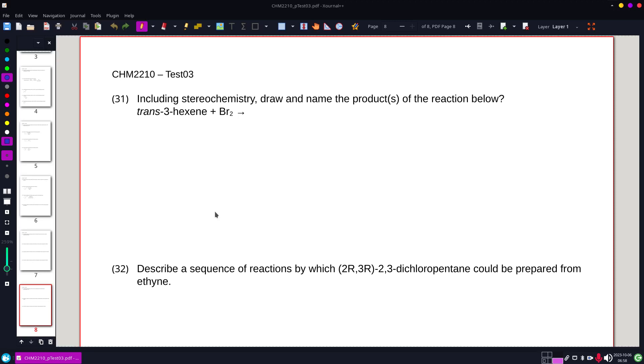Including stereochemistry, draw and name the product of the reaction below which starts with trans-3-hexene. Now, the sixth problem in this playlist has this done with cis, and I did it there with Fisher diagrams and perspective, and I'm gonna do it that same way with this problem.